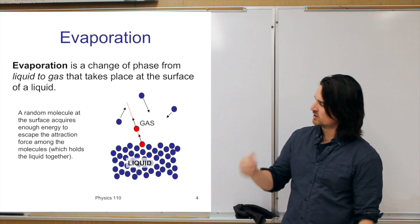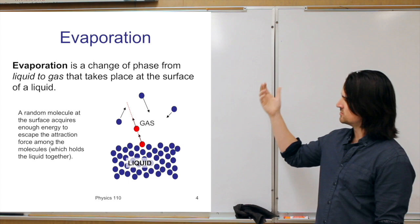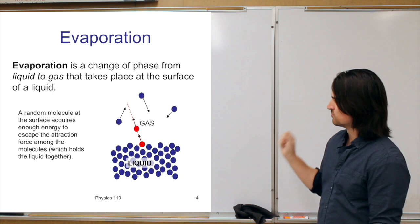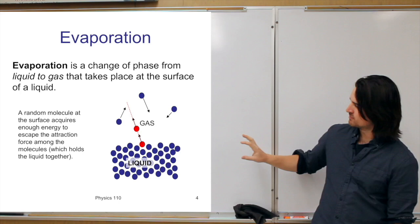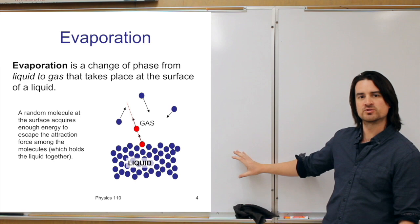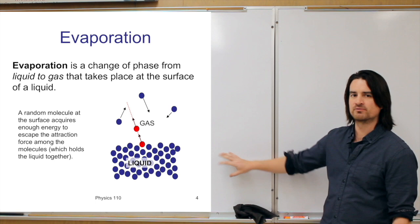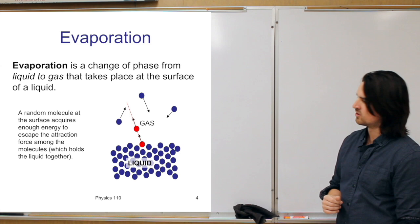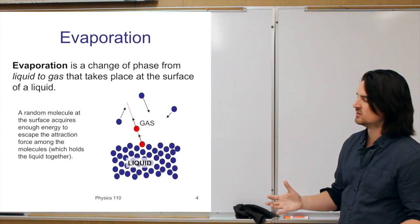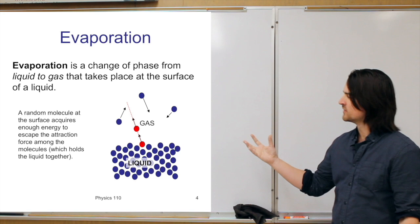If you have a liquid changing to a gas, the general term is evaporation, and it takes place at the surface of the liquid. Thinking about the atomic picture — liquids and gases are all made up of atoms and molecules. In a liquid, all those molecules are more together than in a gas; they can flow around but are confined to roughly the same volume, held together by electromagnetic forces.